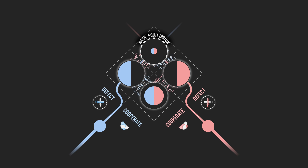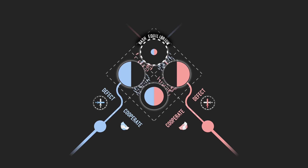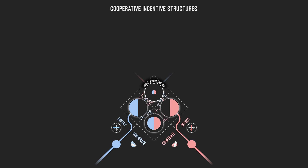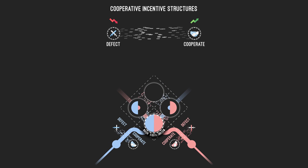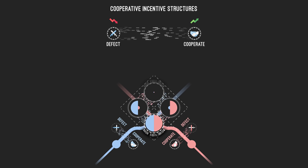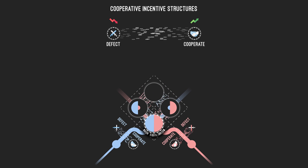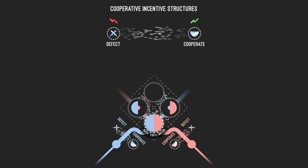Fortunately, we can often escape this situation using incentive structures. Cooperative incentive structures are mechanisms that penalize defective behavior and reward cooperative behavior. These penalties and rewards modify the payout of players in a way that aligns the Nash Equilibrium with the common good. This is a scenario with no incentive structures, and this is the same scenario with cooperative incentive structures.